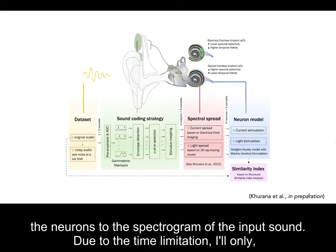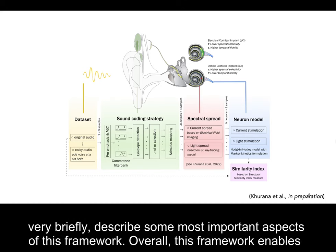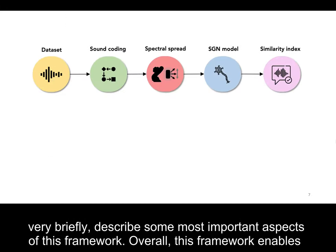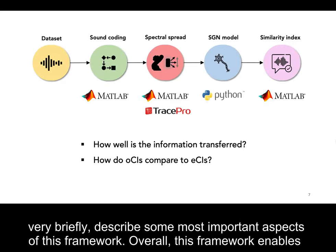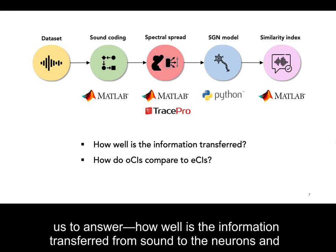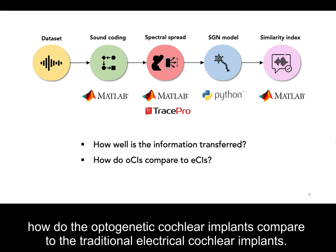Due to time limitations I will only very briefly describe some of the most important aspects of this framework. Overall, this framework enables us to answer how well information is transferred from sound to the neurons, and how optogenetic cochlear implants compare to traditional electrical cochlear implants.